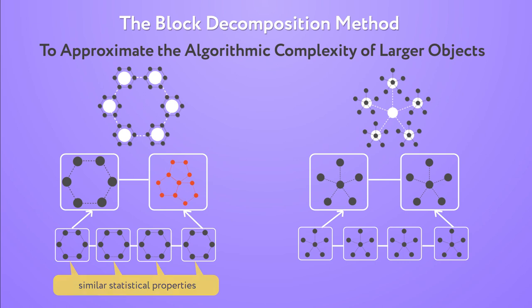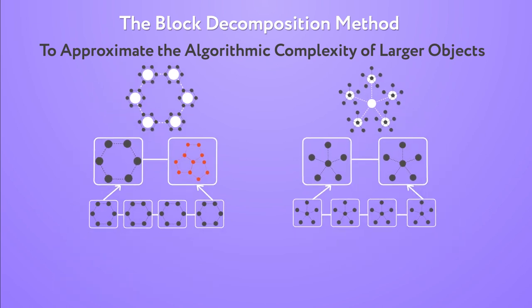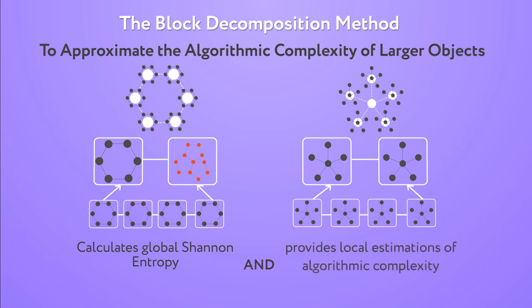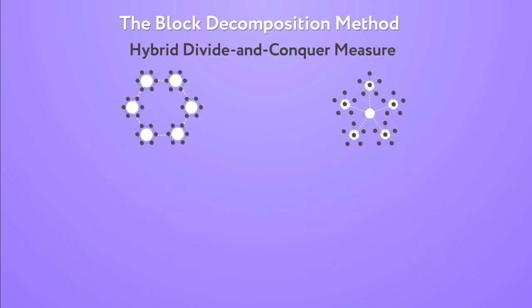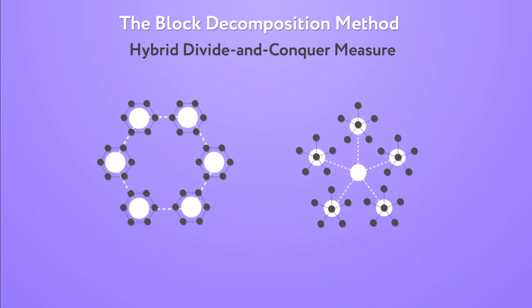One of the most interesting properties of the block decomposition method is that it globally calculates Shannon entropy in the long range, but it provides local estimates of algorithmic complexity in the short range. This hybrid measure of complexity helps scientists characterize objects in more complete ways, leading to enhanced understanding and new discoveries.